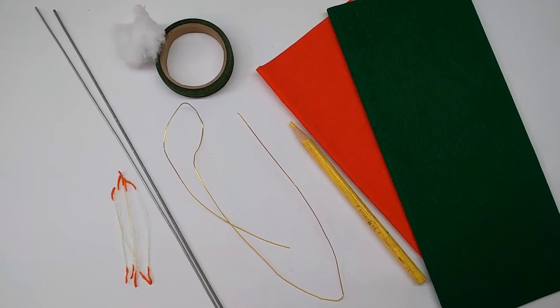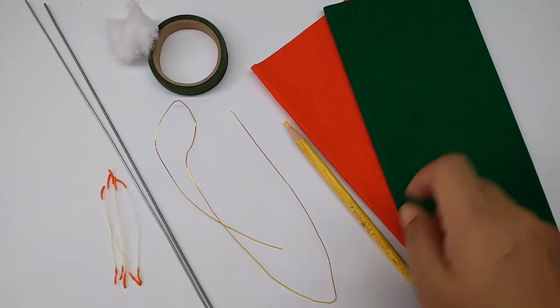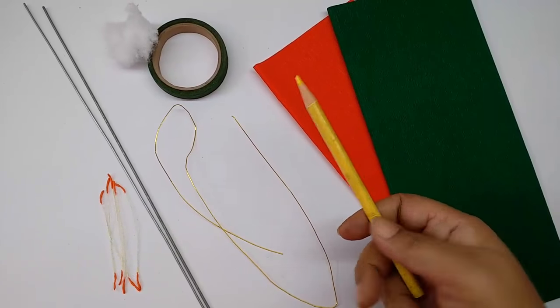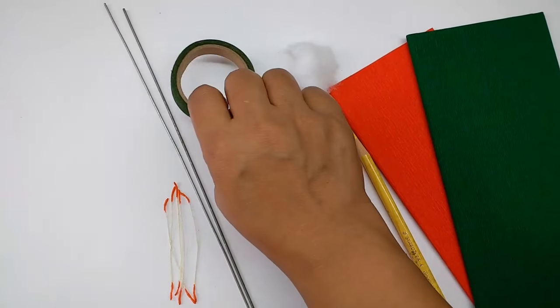Materials required are crepe papers in orange and green, a yellow colored pencil, and thin wire.